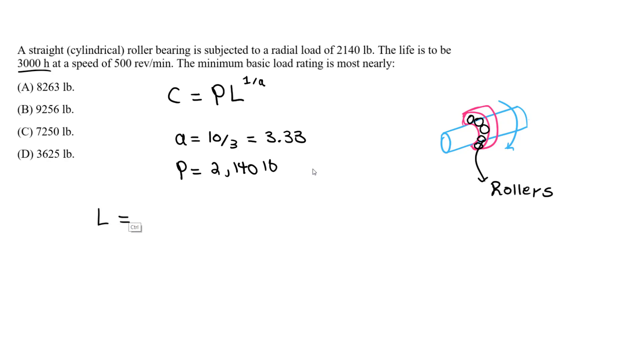And we know that there's 60 minutes in one hour, so one hour is 60 minutes. And we know there's 500 revolutions per minute. So on top, you should have 500 revolutions because we want revolutions as our final unit. And we want minutes down here, so we have one minute.